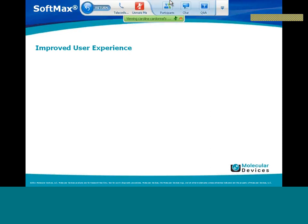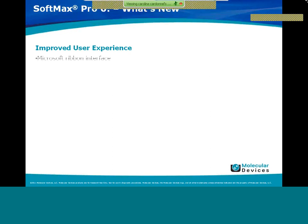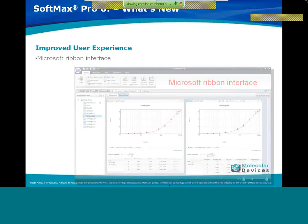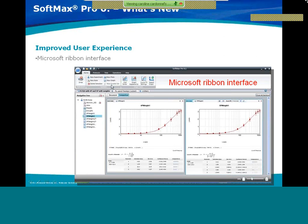SoftMax Pro 6 has a new improved user experience. For current users of SoftMax Pro 5, SoftMax Pro 6 now has a Microsoft ribbon interface that will allow you to access functions more easily. New icons have been added as well, and there is now a zooming option — you can zoom from 70% to 200% into each individual section.